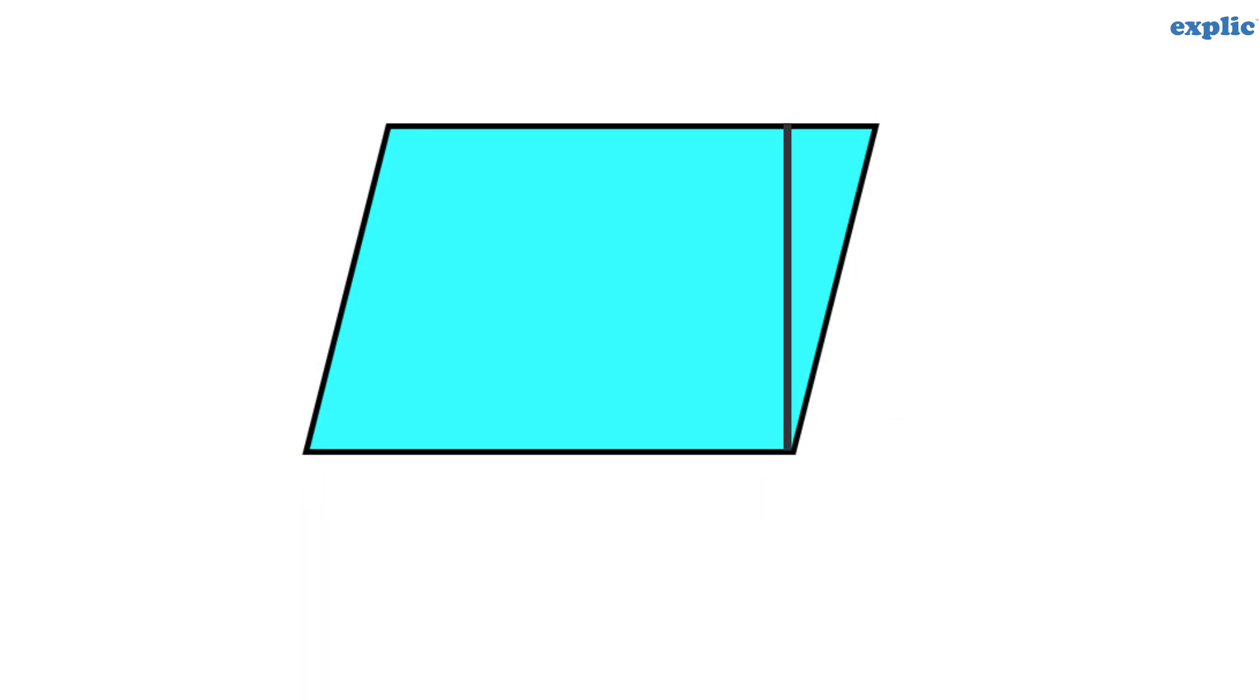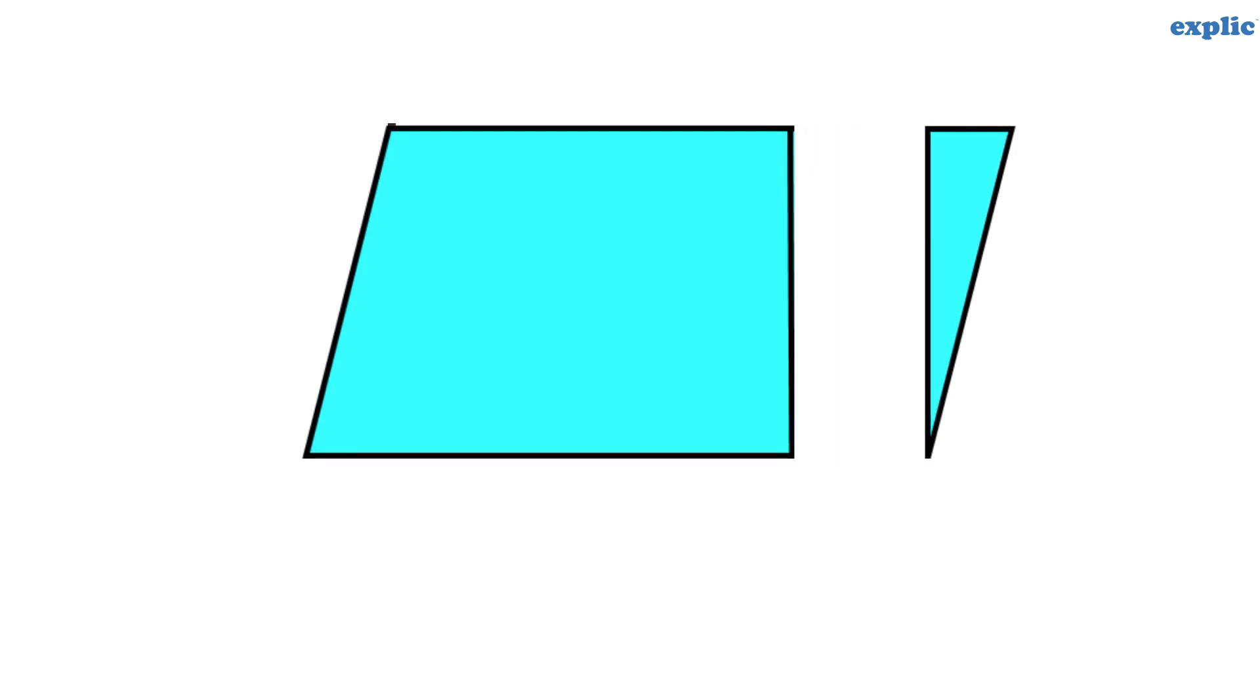Draw a line from one vertex of the parallelogram perpendicular to the opposite side. Cut out the triangle. Now place it on the other side of the parallelogram.